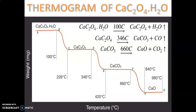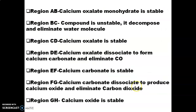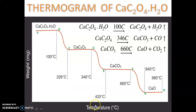In this experiment we take 5 to 10 milligrams of calcium oxalate and place it in the sample holder inside the temperature programmer. The thermal control unit provides the environment for the heating process. We are now discussing the thermogram — the plot of weight versus temperature.